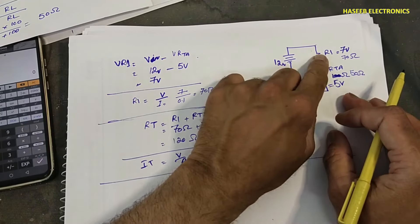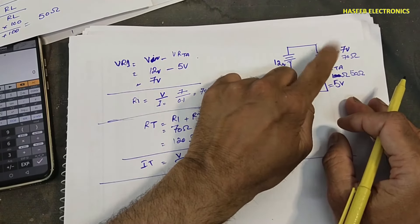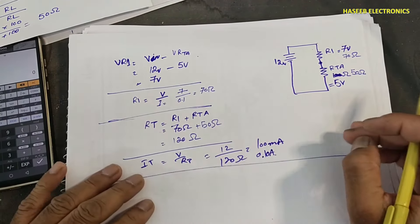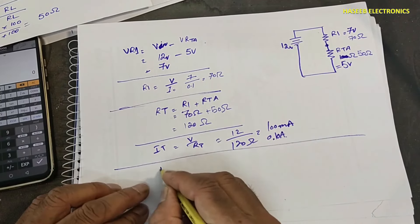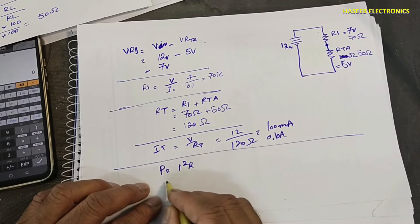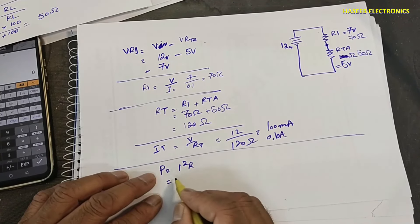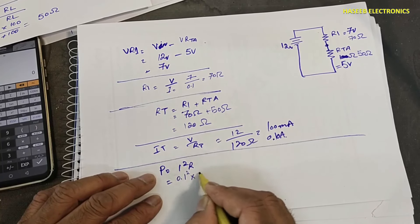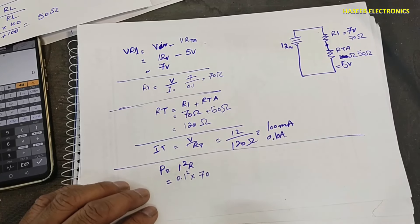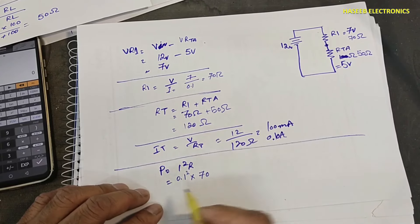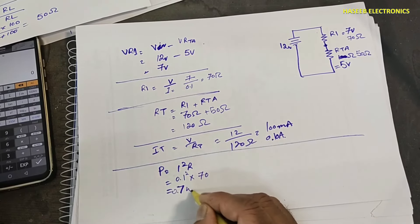How much power rating do we need for R1? We know P equals I-squared times R. For R1: 0.1 squared multiplied by 70 ohms equals 0.7 watts. This is the maximum power consumption of the component when full current flows.